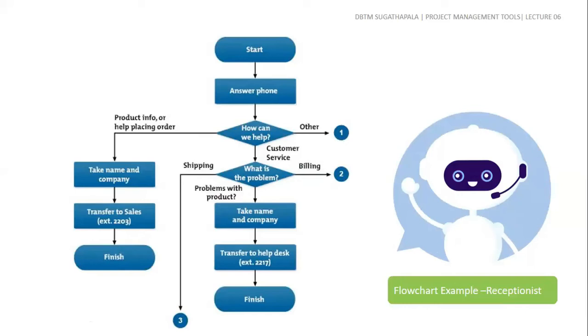Here is an example of a flowchart. Here the receptionist connects calls or diverts them. This process has a defined start and finish.